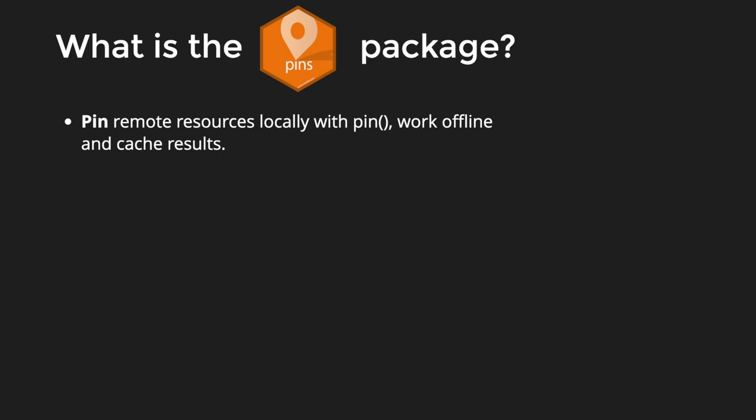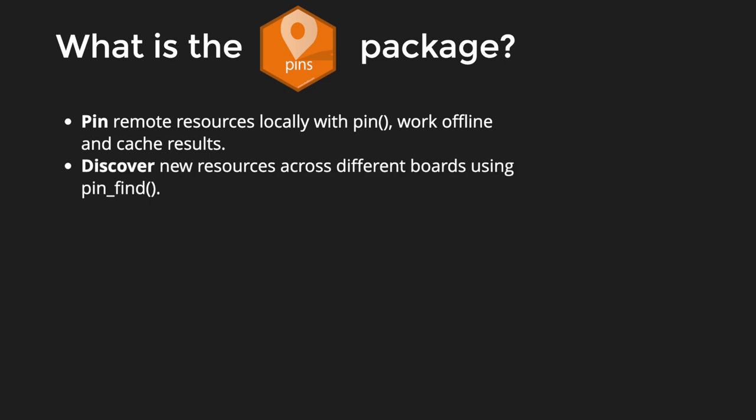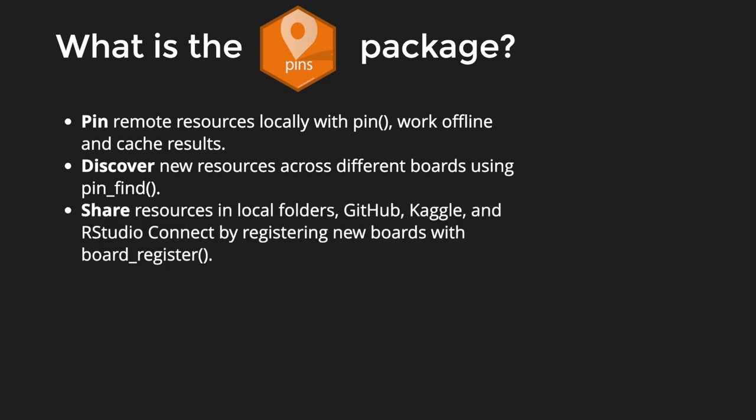So what is the pins package as a quick recap? First, it allows you to get a remote resource into your local machine — say a remote URL with a CSV file — and create a local cache very easily. Once you're connected to remote services like Kaggle, GitHub, or RStudio Connect, you can also search those services for interesting datasets, all within the pins package. And especially important for this problem: the pins package allows you to share datasets in different cloud providers like Google, Kaggle, Azure, and RStudio Connect. Darla is already familiar with this and knows she can share datasets with colleagues who also use R and pins.